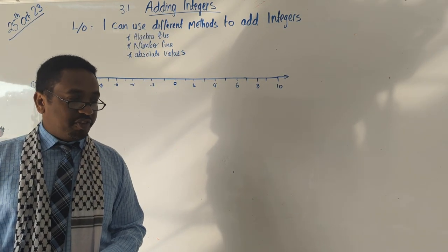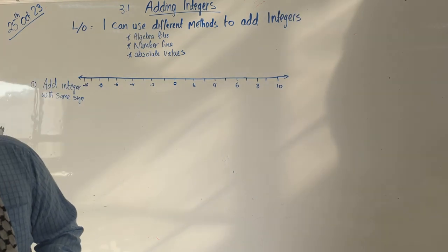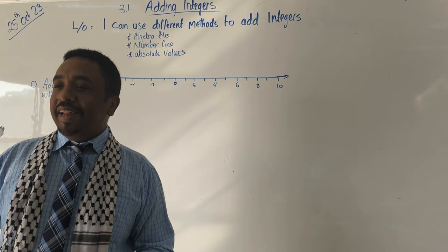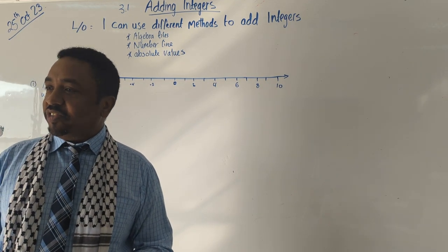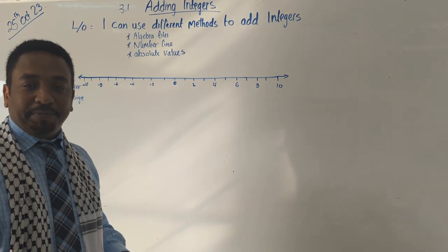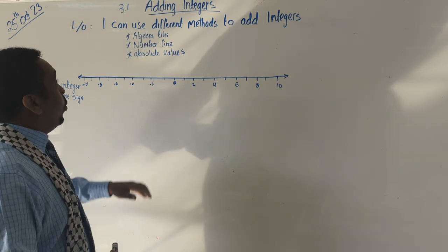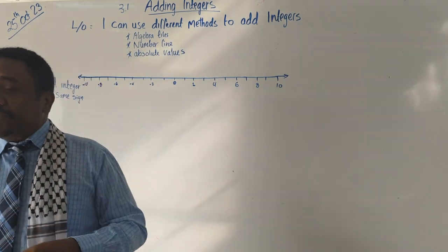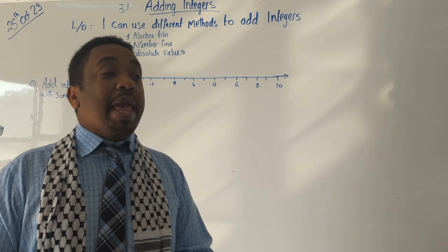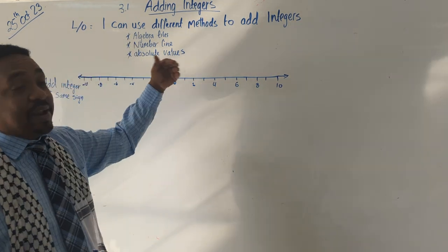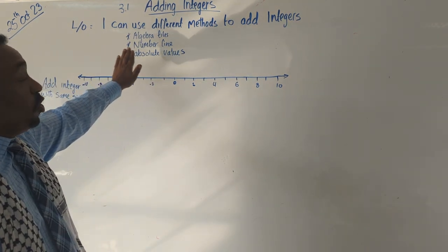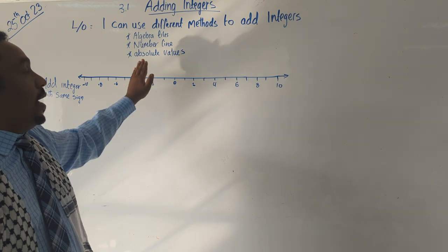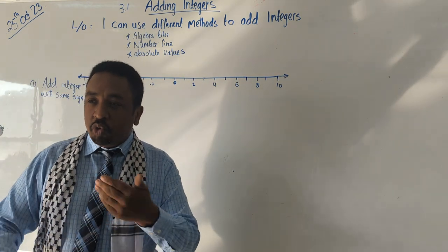We will be learning how to add integers, and I need all your cooperation. First of all, write down the learning objectives — what are we learning today? We are adding integers. At the end of this lesson, I want everybody to be able to use different methods to add integers. Those methods are the right type, number line, and absolute value.